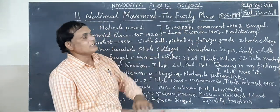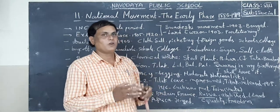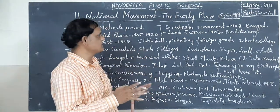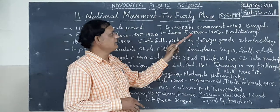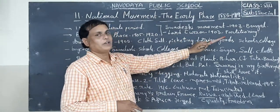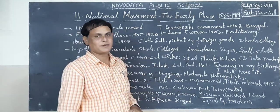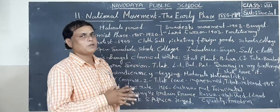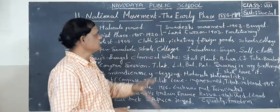Why did the Bengal people start this movement? What was the reason - what are the main causes? Here, the main cause was Lord Curzon. Curzon planned to partition Bengal in 1903, dividing Bengal into two parts. So that was the main reason - the whole Bengal people started revolution against the British government.